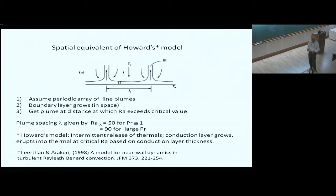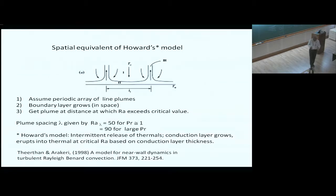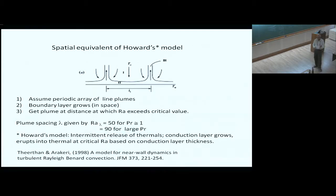There is a famous model called Howard's model for convection next to a surface. He proposed that on a hot plate the conduction layer keeps growing, and at a certain critical thickness it becomes unstable and erupts into a thermal. But experiments show it is essentially plumes. What we proposed was a spatial equivalent: locally a boundary layer grows, and at some distance it becomes unstable and you get a sheet plume. The difference from Howard's model is that instead of periodic time-dependent eruption, you get spatially continuous hot fluid rising along sheet plumes.